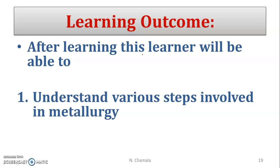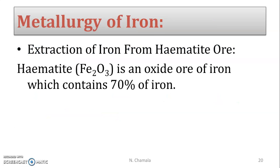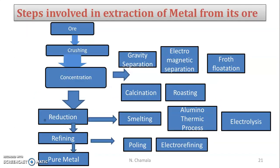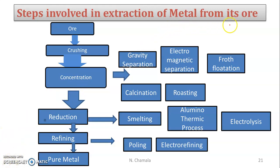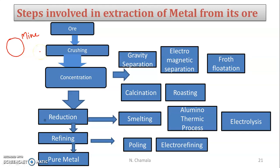Here is a flow chart which shows the various steps involved in the extraction of metal from its ore. First, we have the ore — we get the ore from a mine. From the mine we get the mineral, and the mineral from which we can extract metal economically and profitably is called the ore.